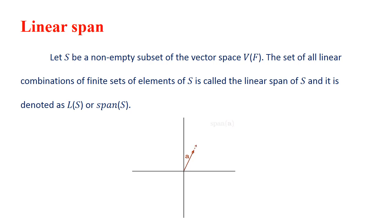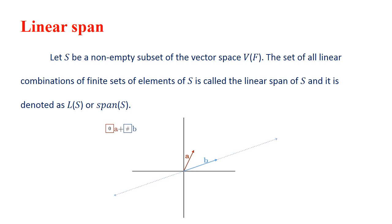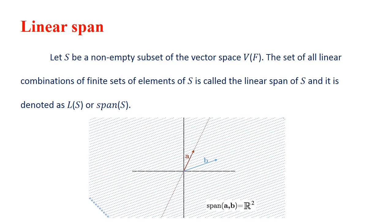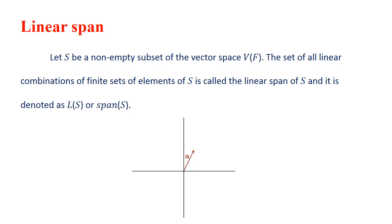Linear span: Let S be a non-empty subset of the vector space V over a field F. Then the set of all linear combinations of finite sets of elements of S is called the linear span of S. This means all the linear combination vectors put in a single set. It is denoted as L(S) or span(S).